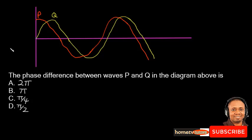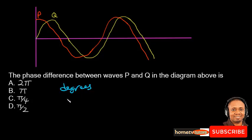Again, this is question 12, JAMB Physics 2018. Which goes: the phase difference between waves P and Q in the diagram above. These two waves are two oscillators that have the same frequency but different phases. If they have the same phase, we would be seeing just one line of waves. The amount of out-of-phase can be expressed either in degrees or radians.